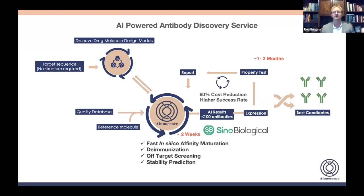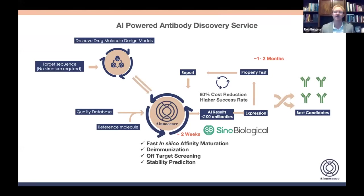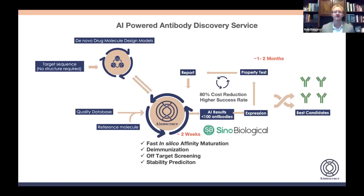Ryan's third question: how many mutations away from the repertoire are your best binders on average? We haven't really calculated that specifically - Ryan can reach out directly and we'll have to do that analysis. Fernando Barroso asks: are there published references regarding the model performance comparison data? We just filed a patent and we're about to have a publication in a couple of months. Ryan also asks: your models are then only using linear primary sequence information? That's correct.